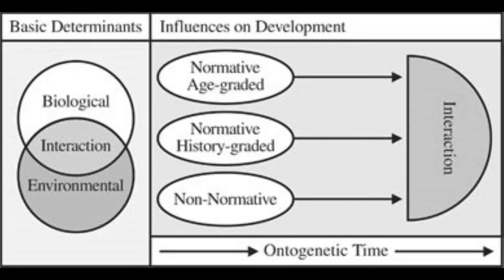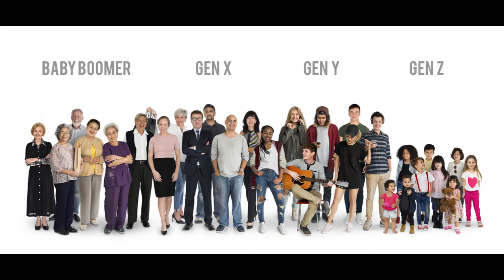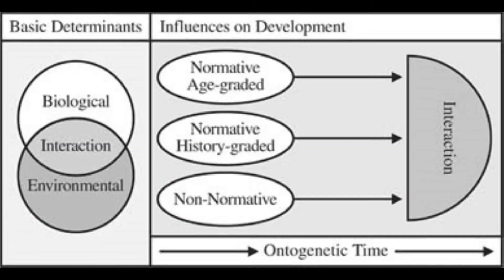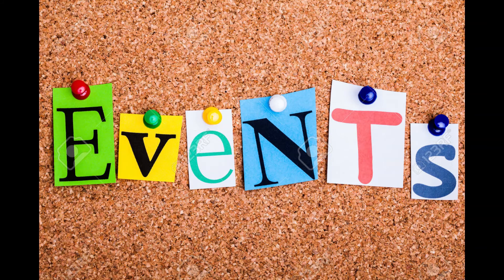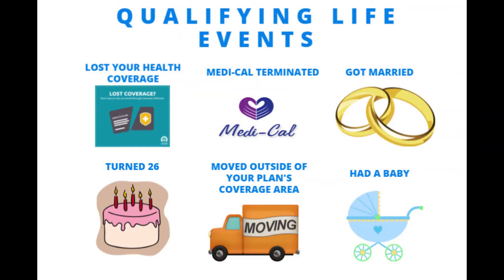Second are the normative history-graded influences, which are common to people of a particular generation because of the historical circumstances they experience. Third are the non-normative life events — unusual occurrences that have a major impact on an individual's life, whose occurrence, pattern, and sequence are not applicable to many individuals.